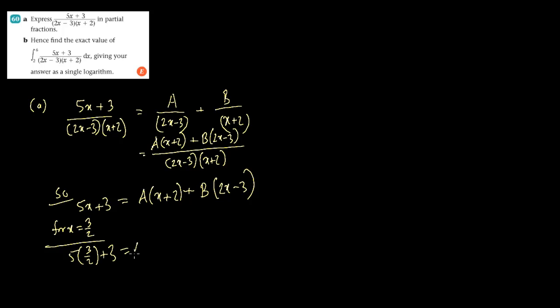On the right hand side, this would be (3/2+2) plus... Now since this 2x-3, I considered this to be 0. If you put 3/2, it would be 3-3 is 0, so this is 0. Now we can find the value of A.